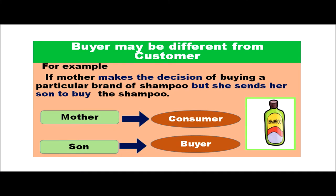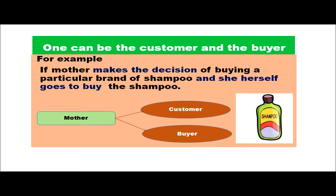The buyer may be different from the customer. For example, if the mother makes the buying decision but sends her son to buy the shampoo, the son becomes the buyer. Since the mother is using the shampoo, she becomes the consumer. One can also be both the customer and the buyer — if the mother decides and herself goes to buy the shampoo, she is both customer and buyer.